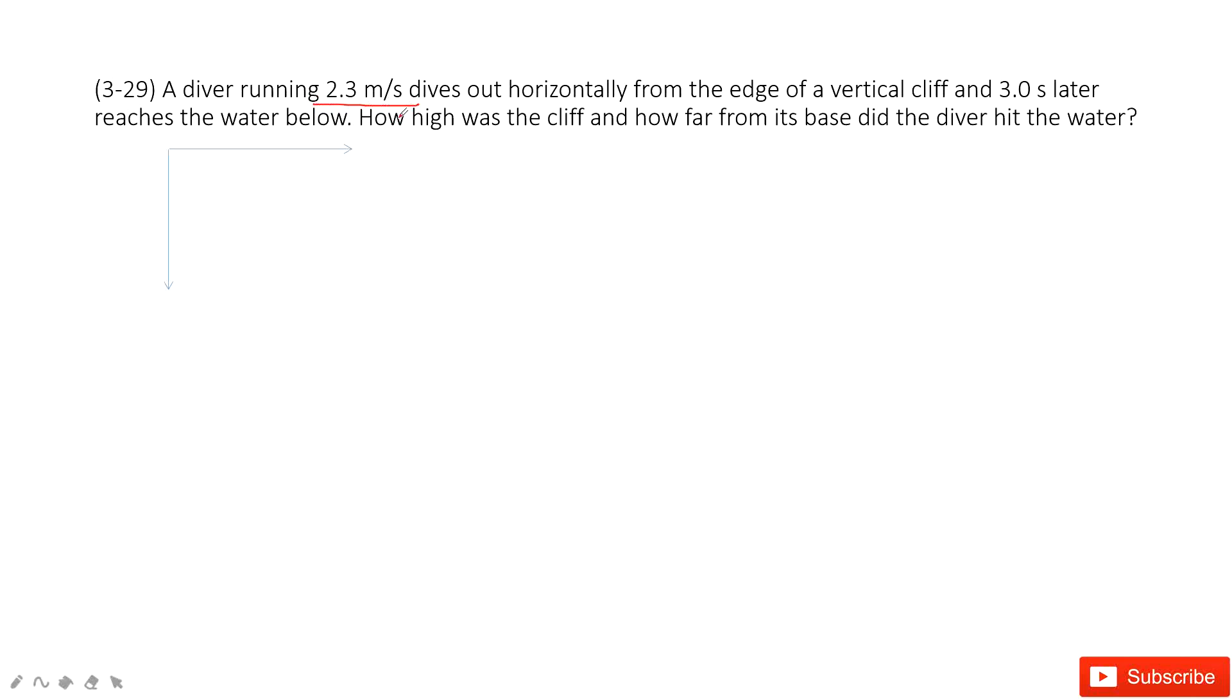2.3 m per second. And then in the horizontal, we know that we can consider because at the initial, the velocity is zero. So the horizontal is just a free forward body. Agree? Yes. And for free forward body, the acceleration is g.